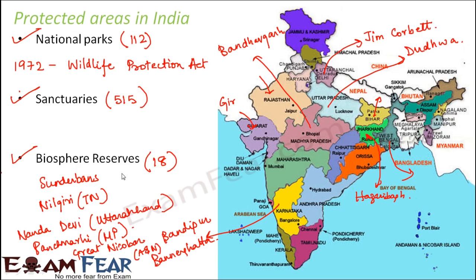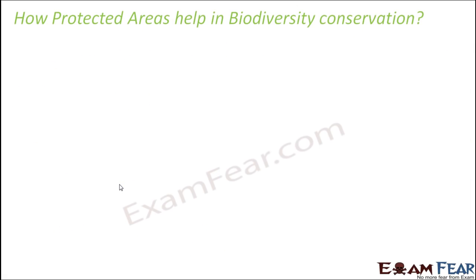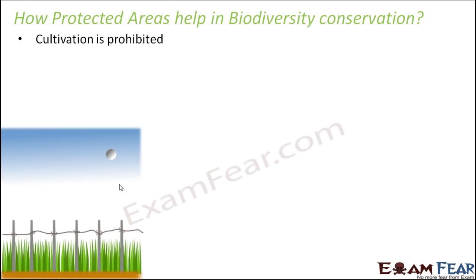So there are a huge number of protected areas in India, either in the form of national parks, sanctuaries, or biosphere reserves. The next question is: how do these protected areas help in biodiversity conservation? First of all, cultivation is prohibited — you are not allowed to do agriculture in these areas.